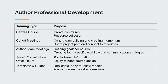Our author professional development consists of many points of contact. We started primarily with a Canvas course and cohort meetings. The Canvas course was designed to create community and engage our authors in discussion and create a shared understanding about what we were doing. It has evolved into a resource bank where folks go when they need specific resources for the work that they're doing at the time.